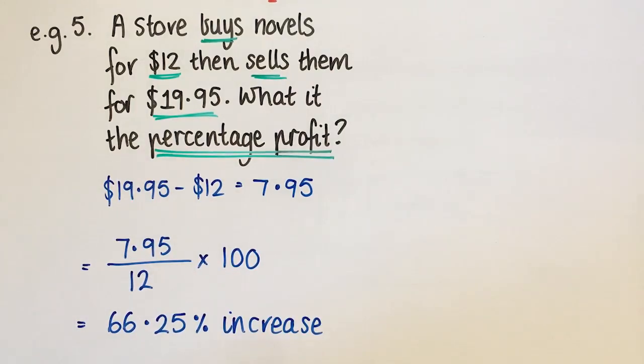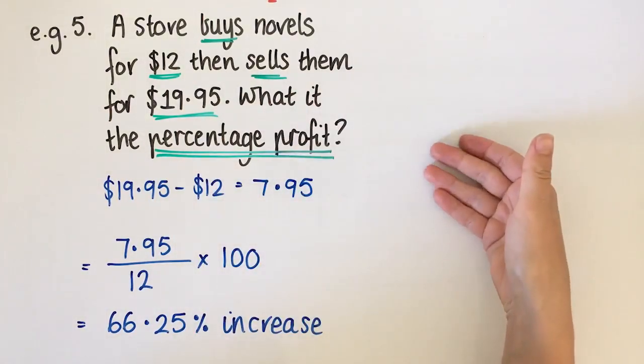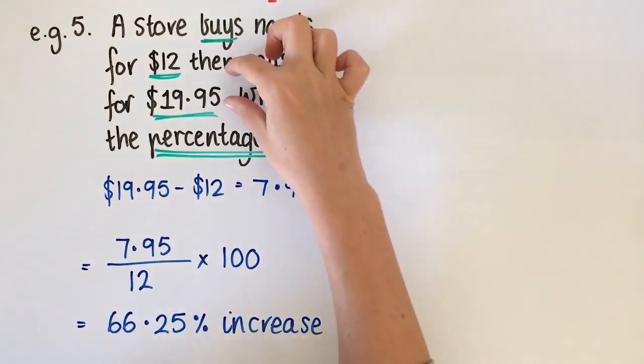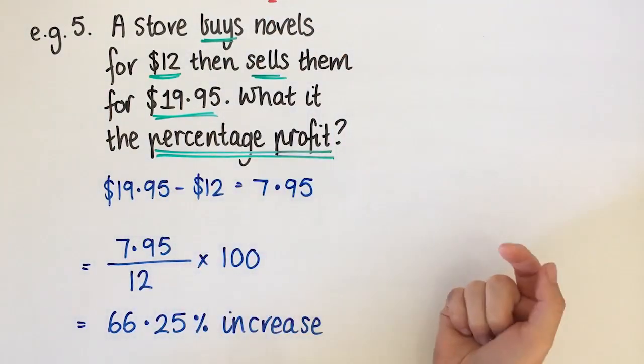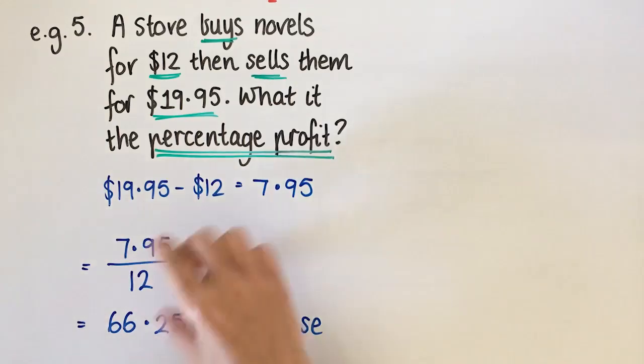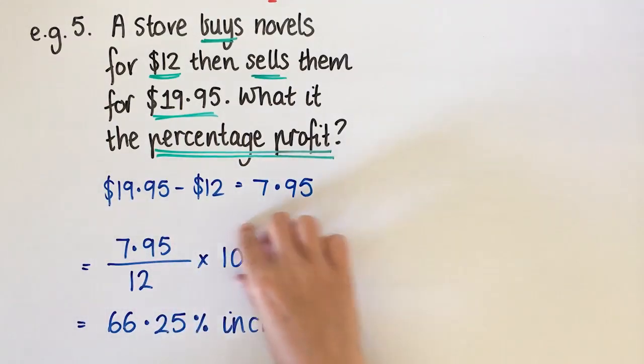So if we think back to our learning intention and success criteria, it was to calculate percentage profit and percentage loss. So we needed to work out the change, whether that was the change in the dollar amount, like in this question, or a change in the percentage amount, like some of the previous questions. And then we need to write that as a fraction for this scenario and work out what the change is. If you can do all of those things, then you've met today's success criteria.